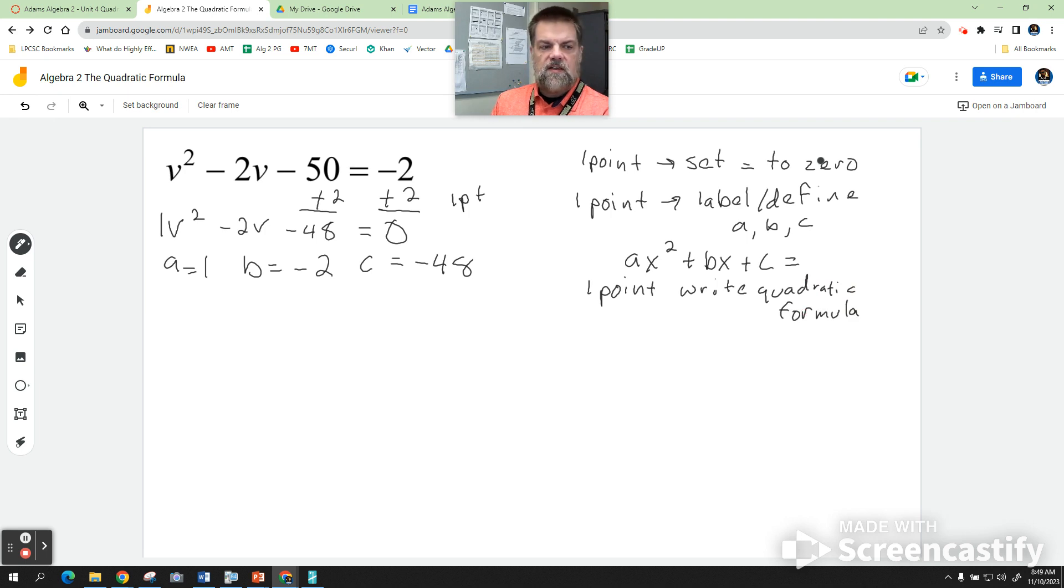I'm going to write the quadratic formula, which is x is equal to - I'm sorry, I wrote it down wrong - negative b plus or minus the square root of b squared minus 4 times a times c, all over 2a.